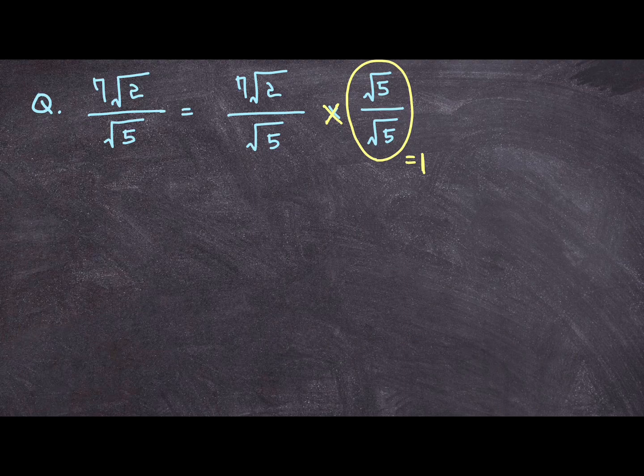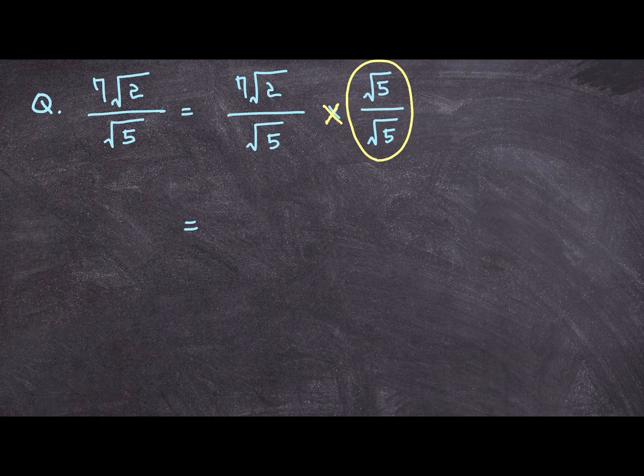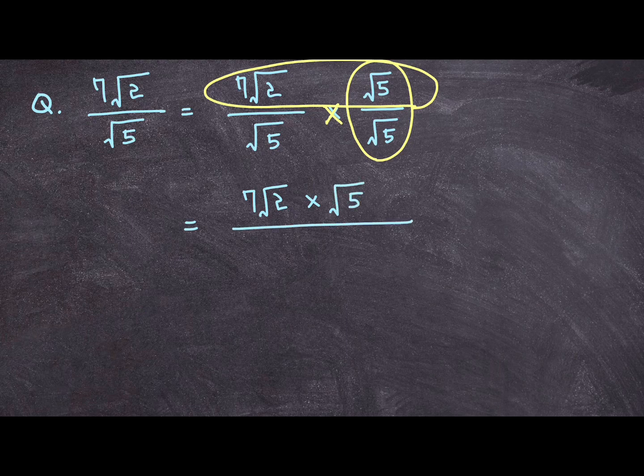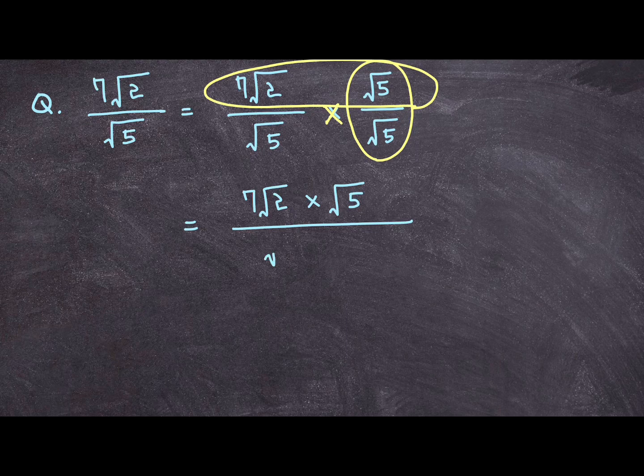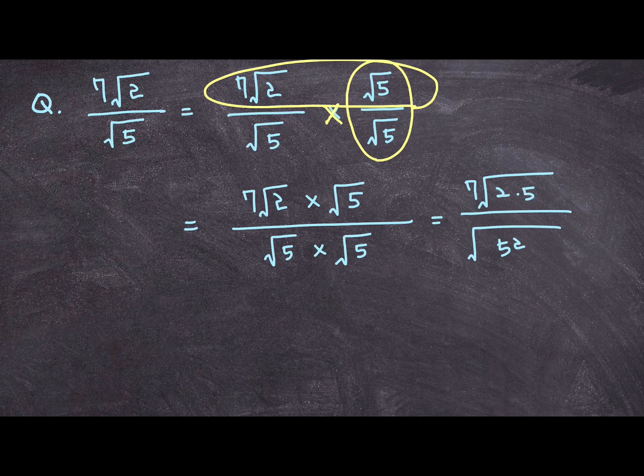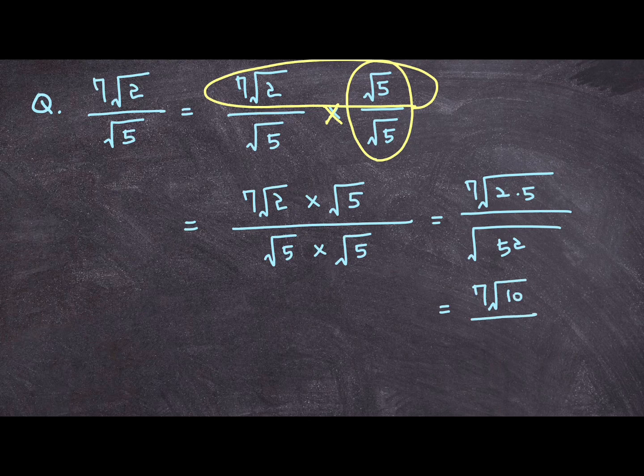So let's see what this ends up getting us. Now this numerator part will be 7 square root of 2 multiplied by square root of 5. And the denominator will be square root of 5 times square root of 5. That'll equal to square root of 5 squared and 7 square root of 2 times 5, which is also equal to 7 square root of 10 over 5. And that'll be our final answer.